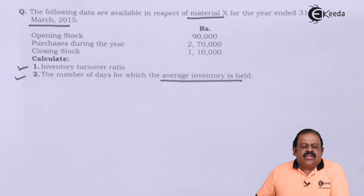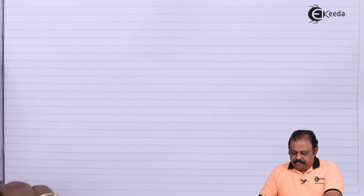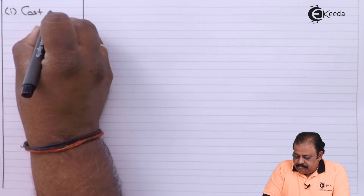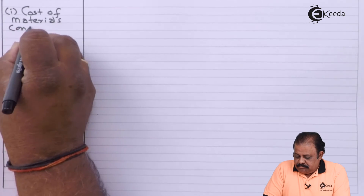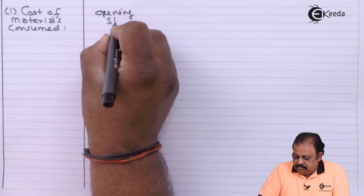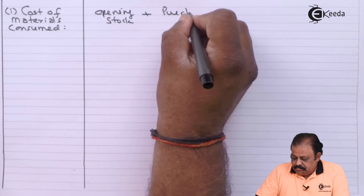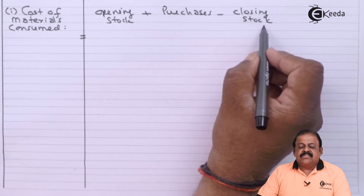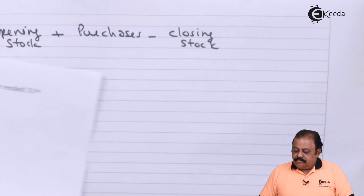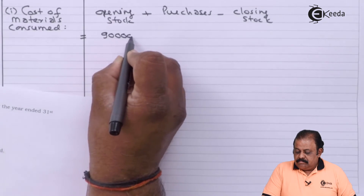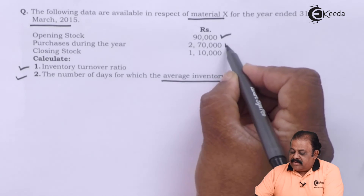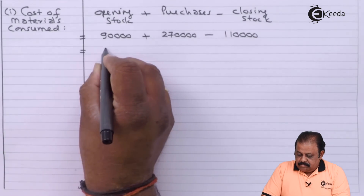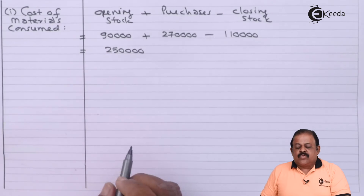Let us see the calculation. To find cost of material consumed: opening stock plus purchases minus closing stock — that is 90,000 plus 2,70,000 minus 1,10,000 — which comes to 2,50,000.